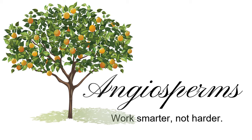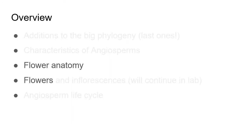This is part two of the lecture on angiosperms. Our theme here is 'work smarter not harder.' We're going to look at flower anatomy and then how we describe flowers — what sort of traits you'll need to know when you go into plant taxonomy.